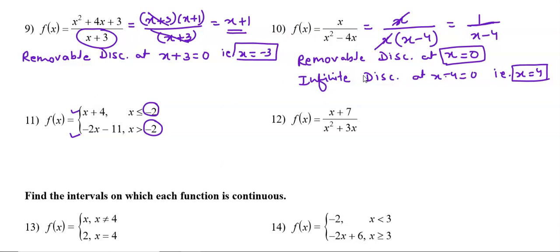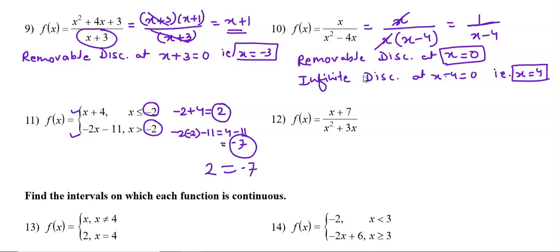At x = -2, putting it into the first function: -2 + 4 = 2. Putting it into the second function: (-2)(-2) - 11 = 4 - 11 = -7. These values are not the same — 2 ≠ -7 — so it is a discontinuous function.